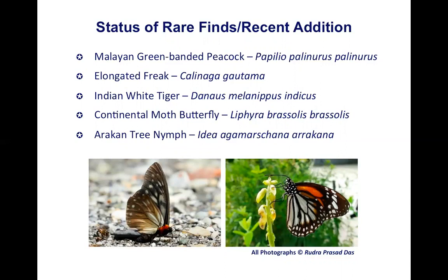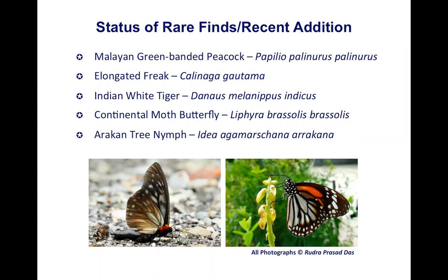Coming to rare finds and recent additions, it is very difficult to justify the status of rare butterflies across such a large literature. The first example is the Malay Green-Banded Peacock, a new record for the Indian butterfly checklist, recorded by Shubhankar Patro and Arjan Basu Roy, who managed to take a single photograph. The speaker also observed the species around 2008 during monsoon but was unable to photograph it.